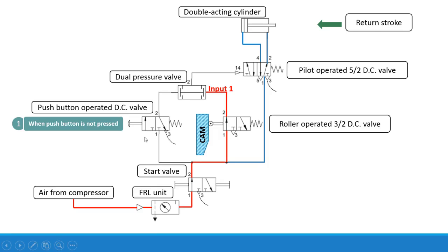Then we have a push button operated direction control valve, then a roller operated 3x2 direction control valve as indicated. Then the dual pressure valve, which is the important part of this AND circuit and logic circuit, then a 5x2 direction control valve and the double acting cylinder.